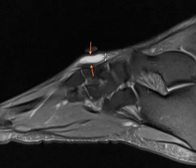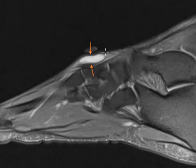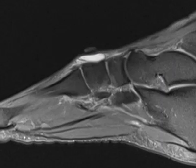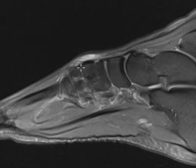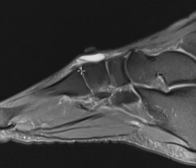I put arrows here. They're little fluid pockets — fluid is white on this sequence — and it looks like this one comes out of this joint. A lot of times they come out of a joint and they'll drape over a bone like this.